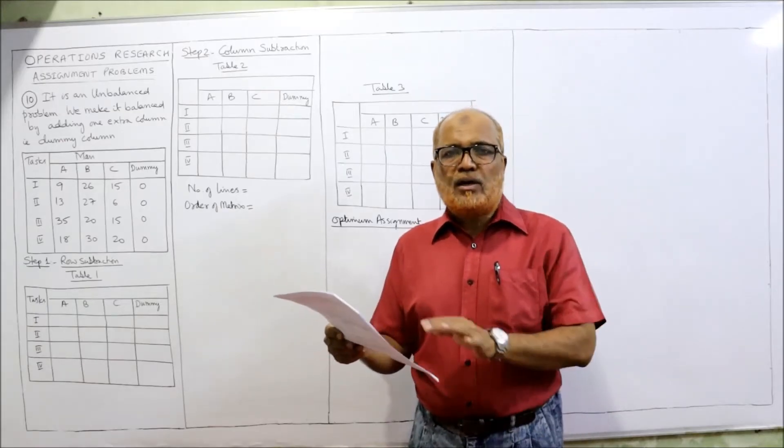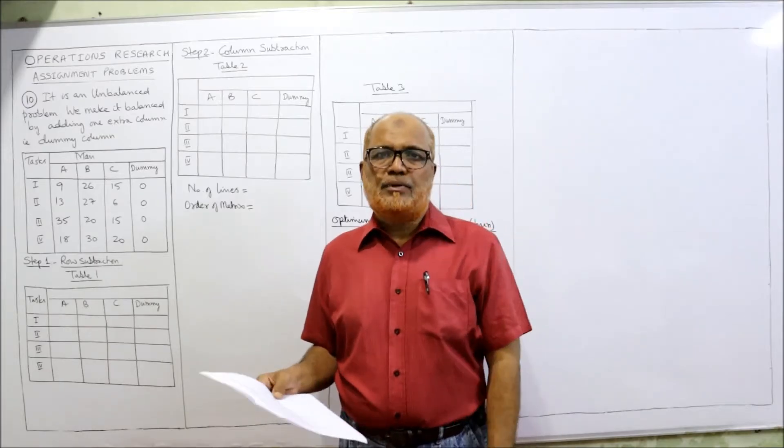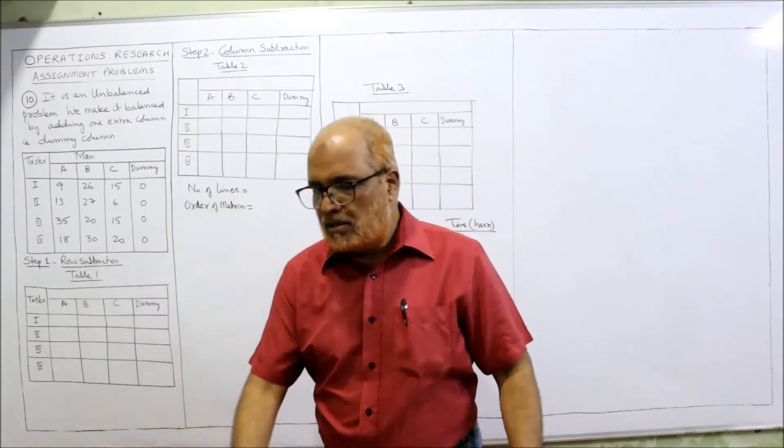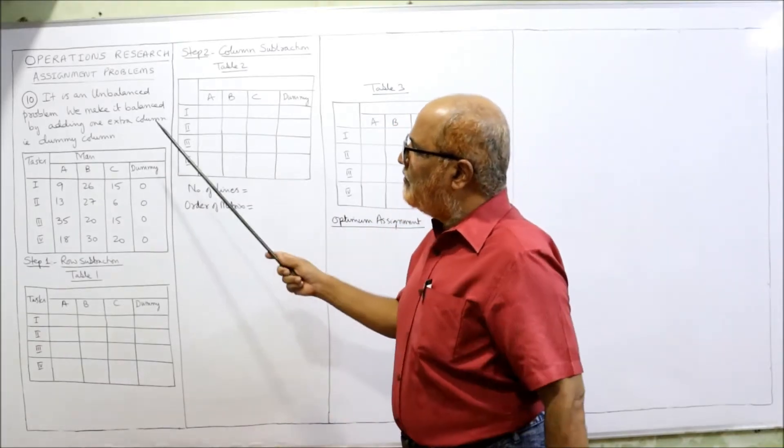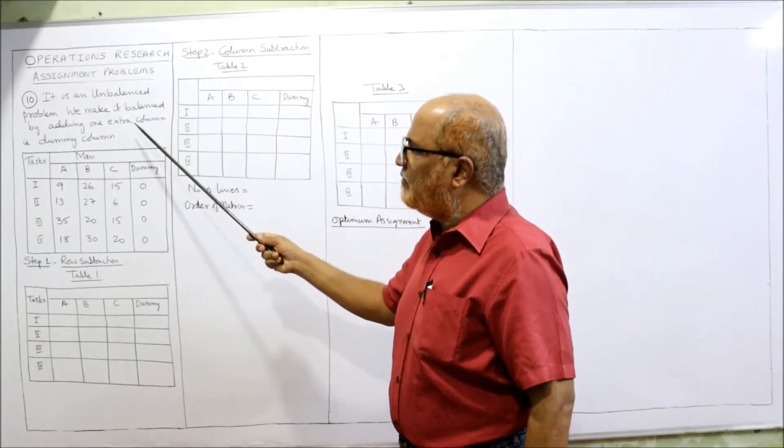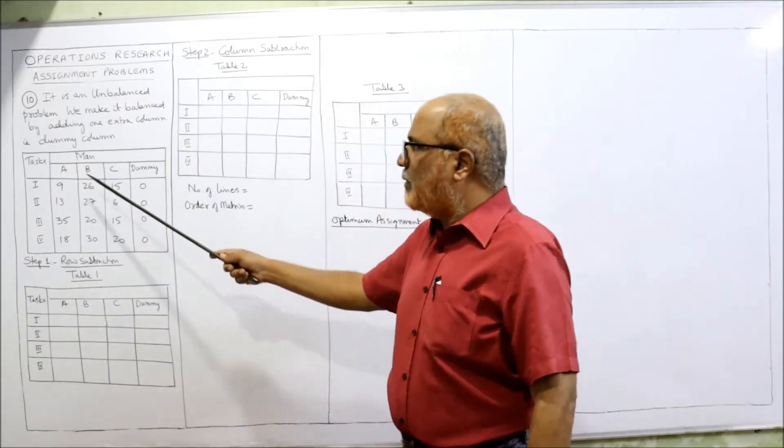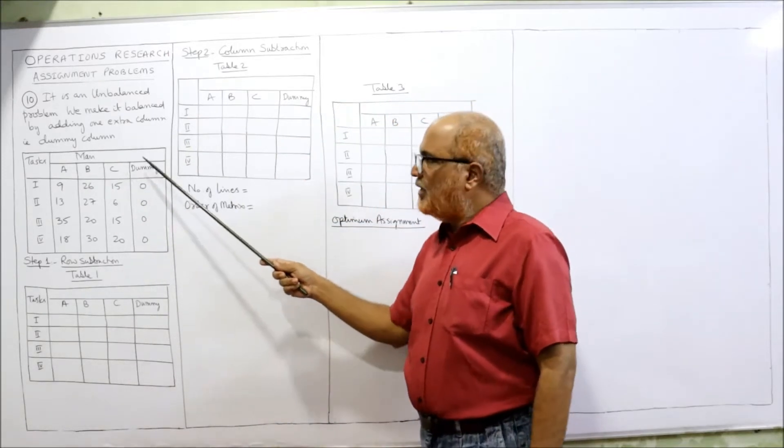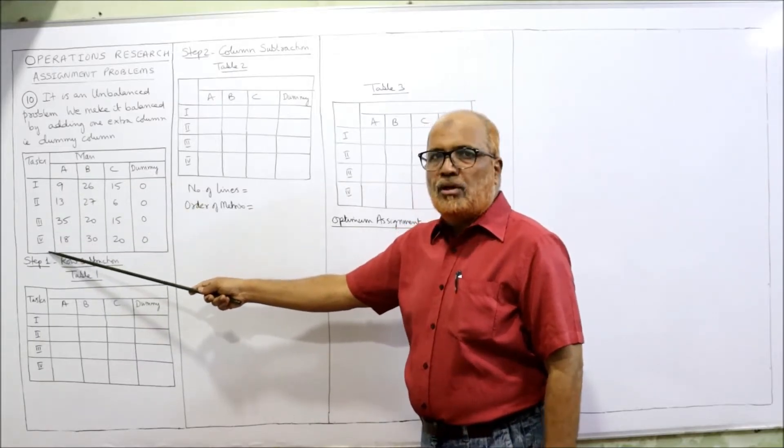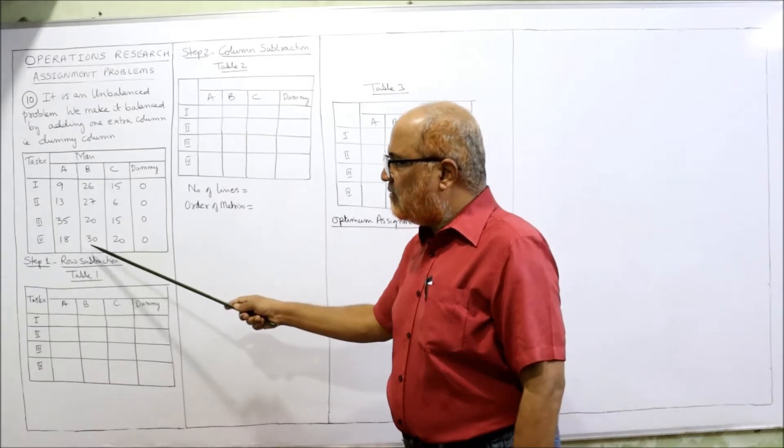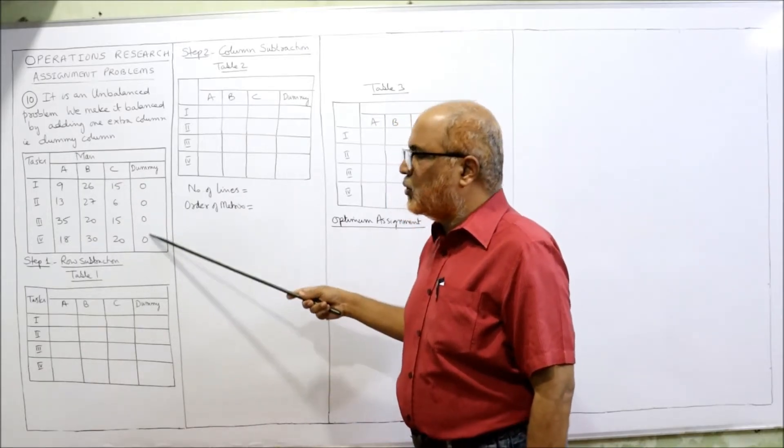First, we have to balance the problem by making equal number of rows and columns. Here columns are only 3, so we open a dummy column with 0 elements. We make it balanced by adding one extra column - the dummy column. Already A, B, C columns are given in the problem. All these elements are given in the problem, and the elements of dummy column are 0s.